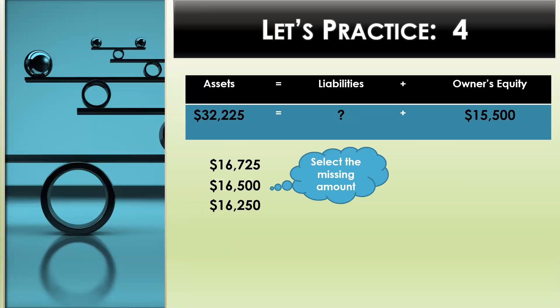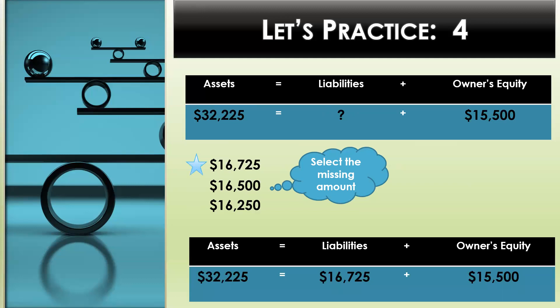Let's do this again. Here we are given assets in the amount of $32,225. We are given the amount for owner's equity, and that's $15,500. So what amount do we need to add to $15,500 to equal $32,225? The missing amount in this equation is $16,725. After we fill in this missing amount, you will see that the accounting equation is in balance — assets equals liabilities plus owner's equity — and both sides equal $32,225.